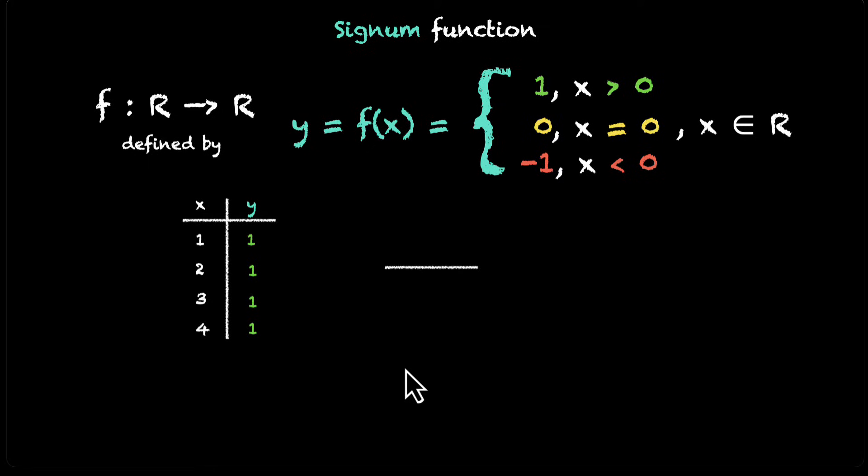What about 0? So when you put 0, you get 0. And what about the negative values? Well, for any negative value, the output will always be the same. It will be minus 1. So here's the summary. You get 1 for positive values, you get 0 for 0, and you get minus 1 for negative values.